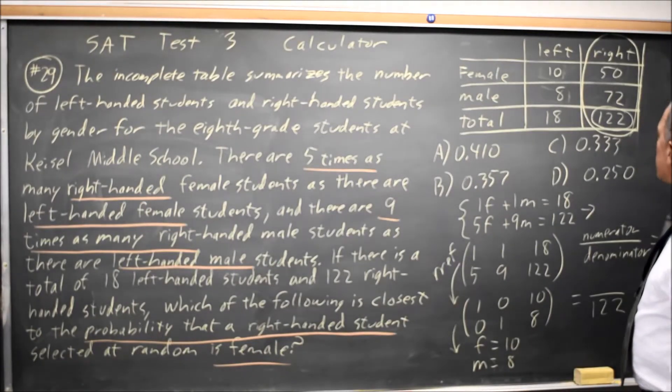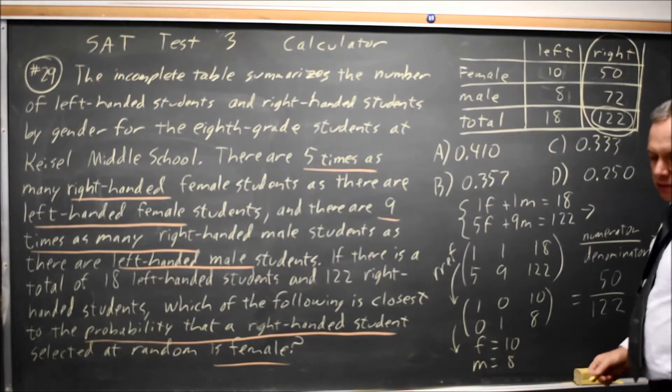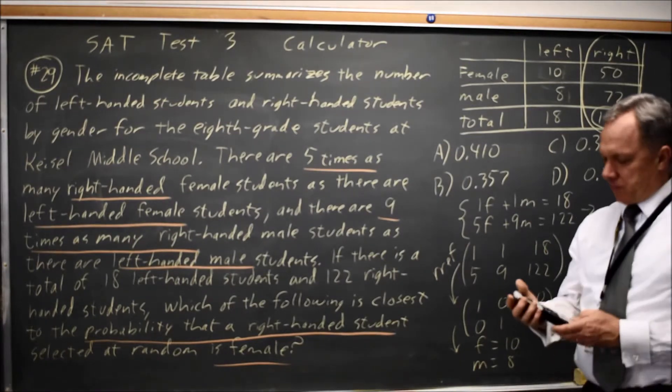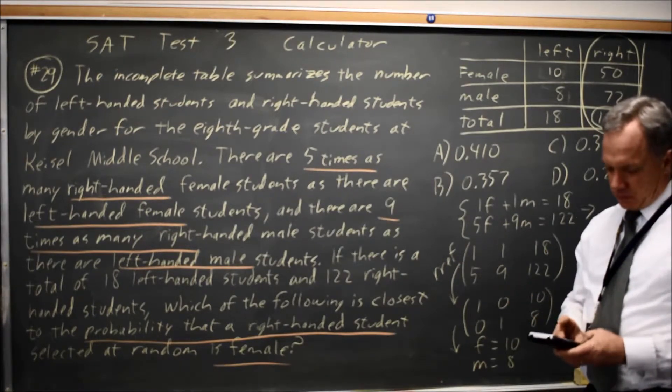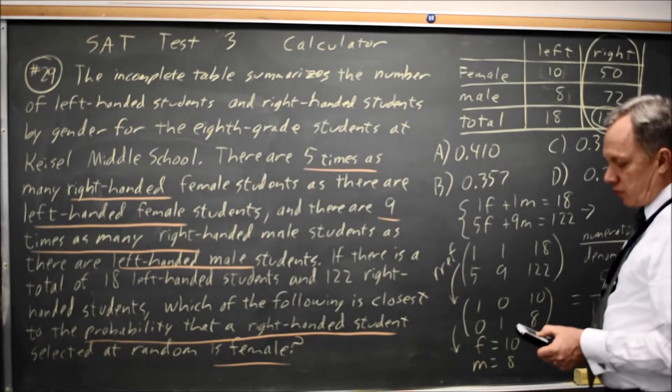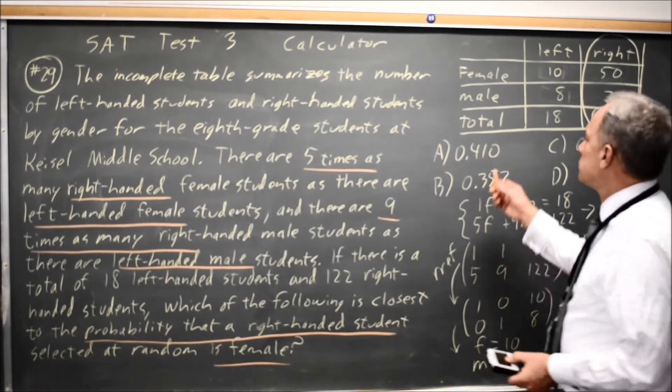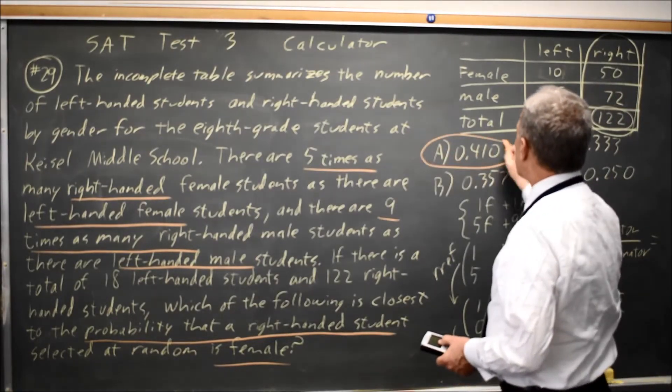And 50 out of 122 are female. And that gives me .4098, which is closest to choice A, .410.